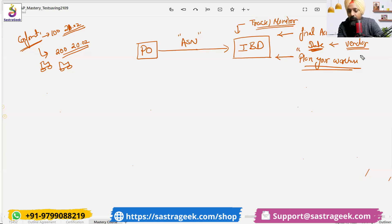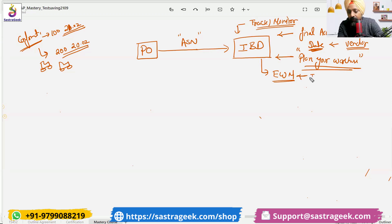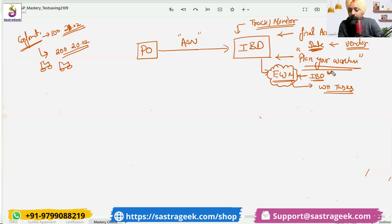When we say you would be able to plan your warehouse, we have advanced systems like EWM — Extended Warehouse Management. The EWM system uses this IBD, the inbound delivery, to create warehouse tasks. If you have an EWM implemented, the inbound delivery would be a very important document to connect with the EWM Extended Warehouse Management.